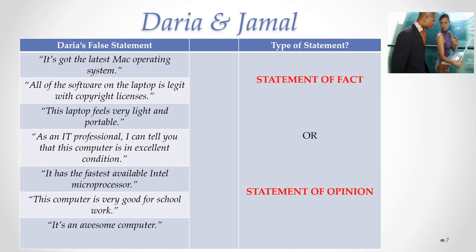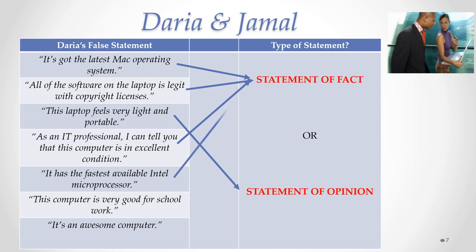Let's look at a number of different false statements that Daria may have made to Jamal to get him to enter into a contract to buy her laptop. 'It's got the latest Mac operating system' — that would be a statement of fact. 'All of the software on the laptop is legit with copyright licenses' — that's another statement of fact. 'This laptop feels very light and portable' — that's a statement of opinion. 'As an I.T. professional, I can tell you this computer is in excellent condition' — that usually would be a statement of opinion, but because it comes from an expert, it could be considered a statement of fact. 'It has the fastest available Intel microprocessor' — another statement of fact. 'This computer is very good for school work' and 'it's an awesome computer' — both statements of opinion.